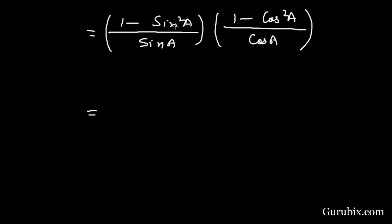So this equals 1 minus sin squared A, which equals cos squared A, and here we have 1 minus cos squared A, which equals sin squared A. And here we have sin A times cos A. We can cancel out one cos A with one cos A and one sin A with one sin A, so we remain with cos A sin A.